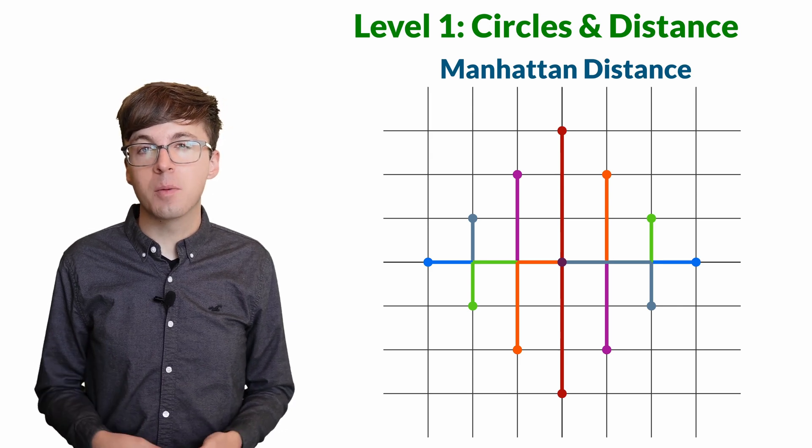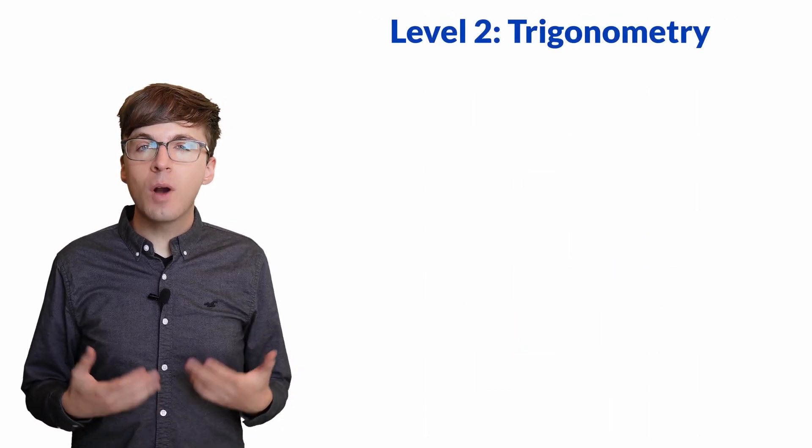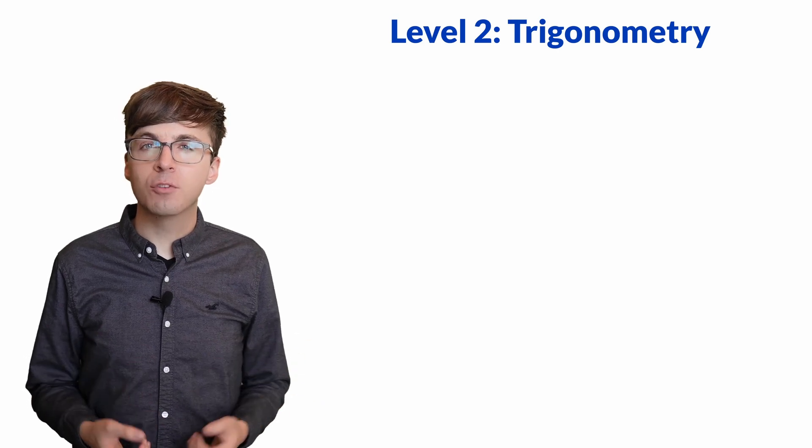But in many cases we use the straight line Euclidean distance, and circles and pi will come up. For level two, let's see why pi appears in trigonometry, the study of triangles.